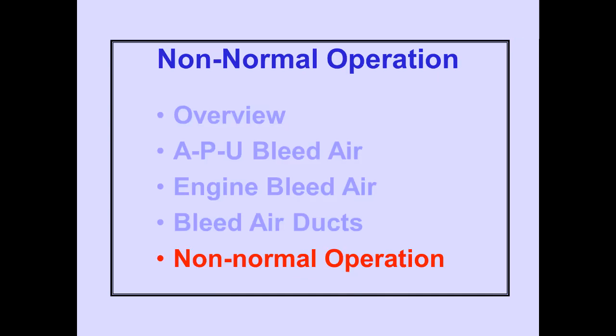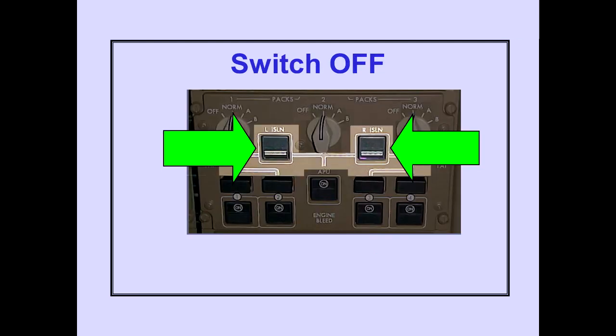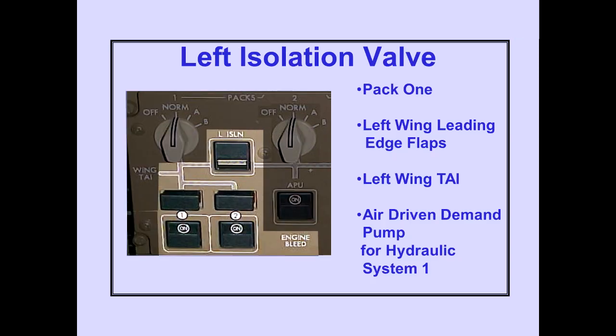We will now discuss non-normal operation. Pushing a left or right isolation valve switch off closes the respective isolation valve. With the left isolation valve closed, pack one, the left wing leading edge flaps, the left wing thermal anti-ice duct, and the air-driven demand pump for hydraulic system one are isolated from the rest of the duct system.